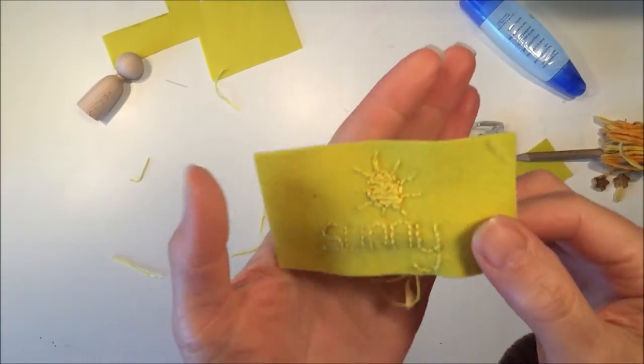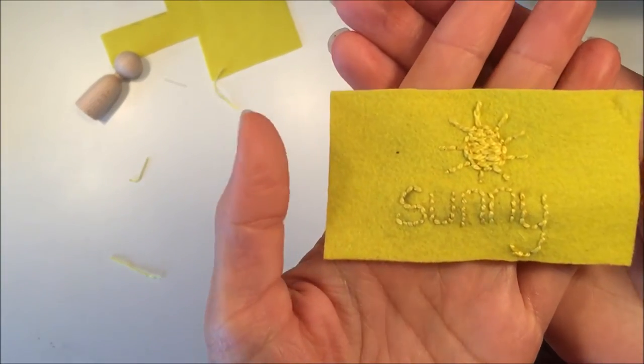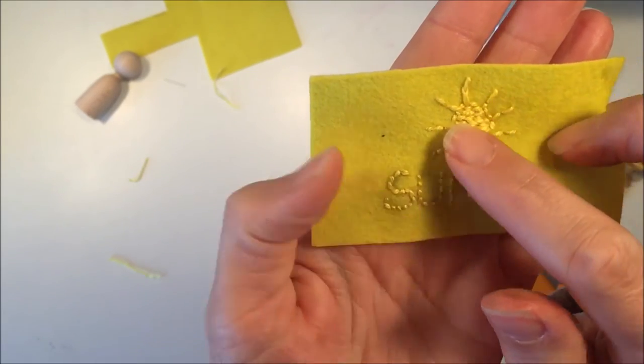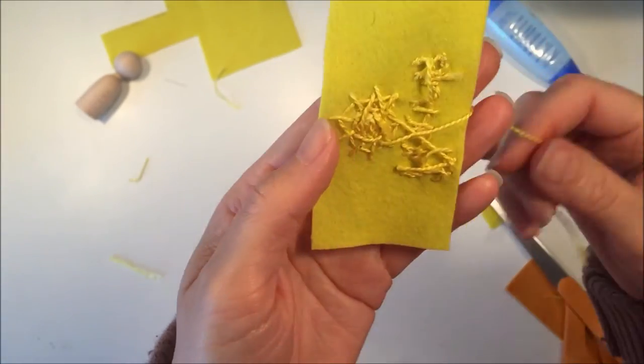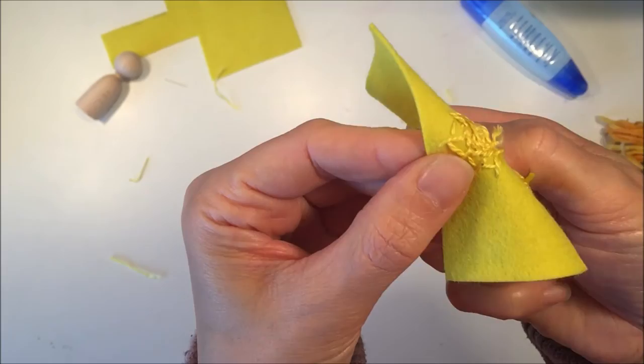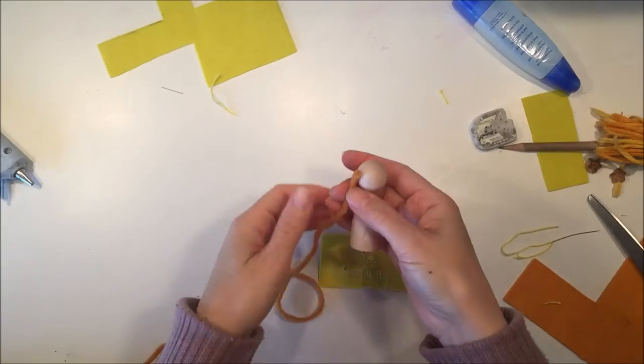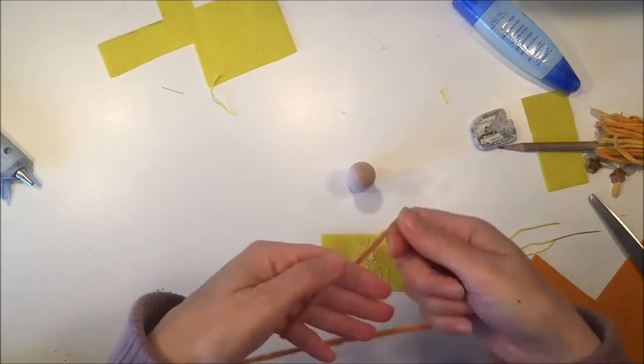So here it is when it's all done. It says sunny, and I added a little sun up there as well. So I'm going to leave all of this stuff on the back the way it is because it's all going to get glued onto the finger puppet.